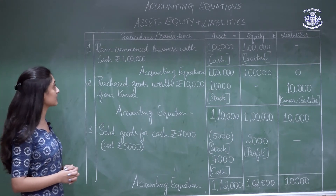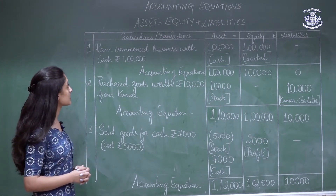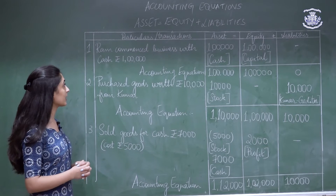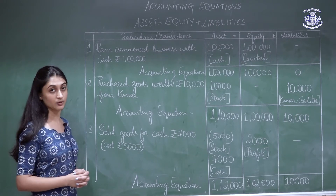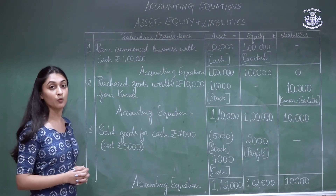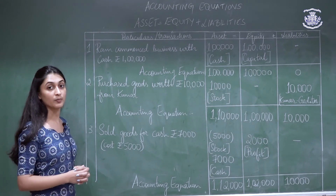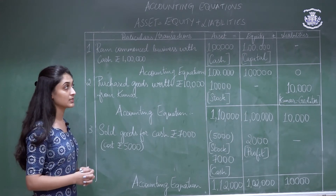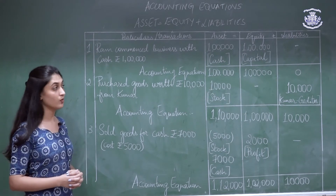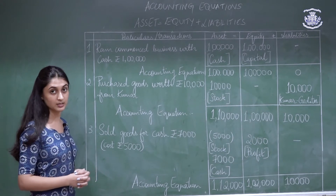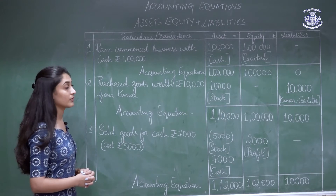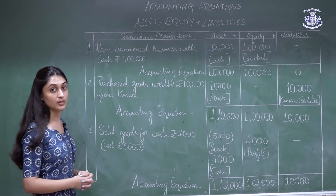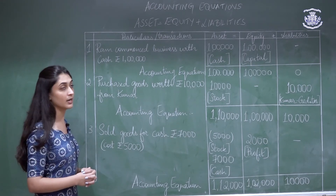The first transaction: Ram commenced business with cash of rupees 1 lakh. There are two aspects — the cash account and the capital account. Cash is increasing by 1 lakh, so the asset column is added by 1 lakh. Capital increases by 1 lakh, so the equity column shows 1 lakh. The new accounting equation is: Assets 1 lakh = Equity 1 lakh + Liabilities 0.